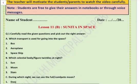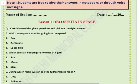Question number 1. Carefully read the given questions and pick out the right answer. First question is: which transport is used for going into space? The options are bus, airplane, aeroplane, and spaceship. So the answer is spaceship.